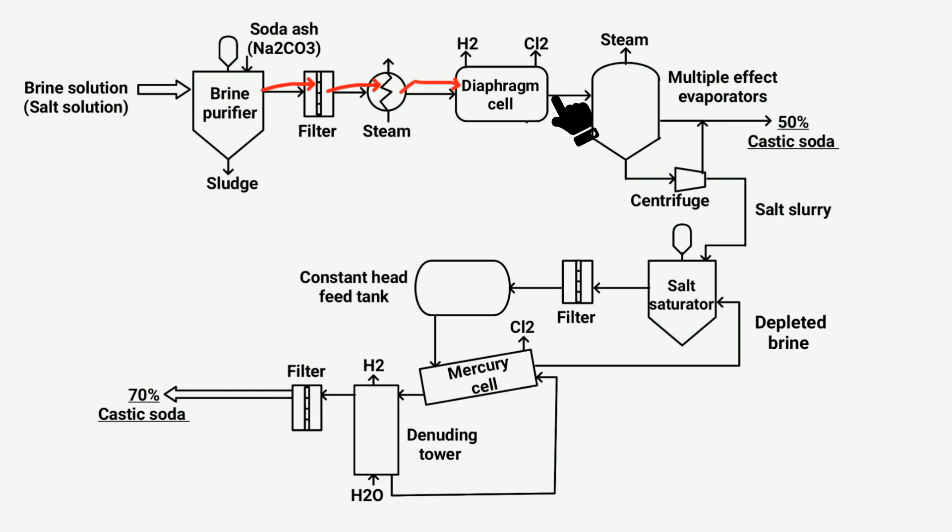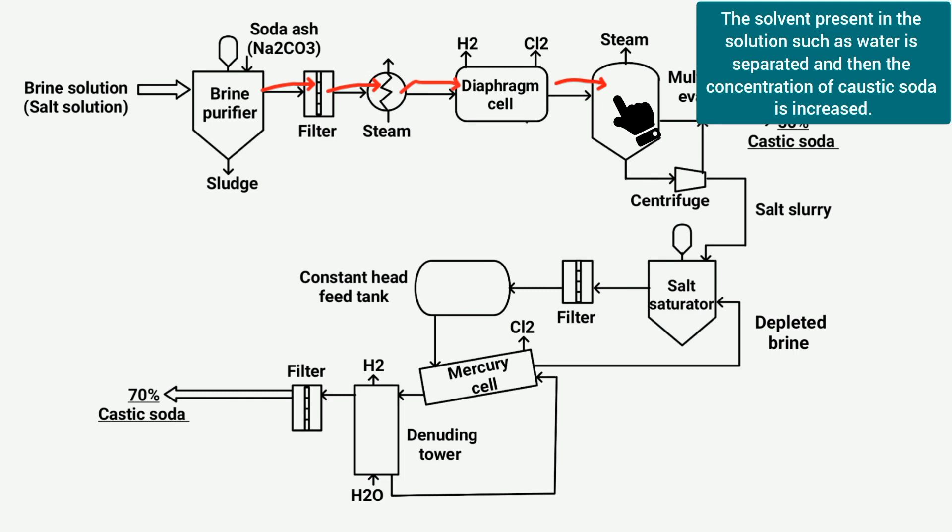The obtained solution in the diaphragm cell contains approximately 10-12% caustic soda and other unreacted reactants. To increase the concentration of caustic soda, the solution is processed through multiple effect evaporators, which operate in a series or stage configuration. These evaporators evaporate the solvent, such as water, from the solution,